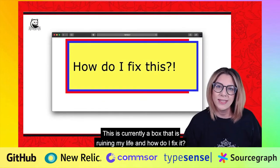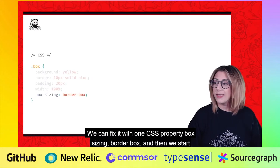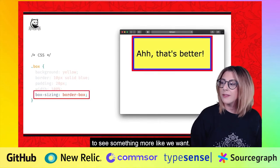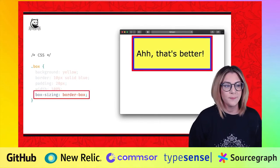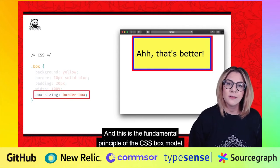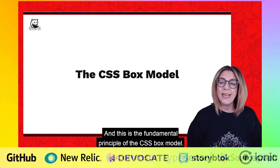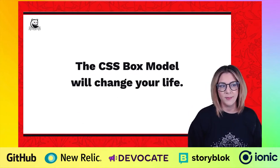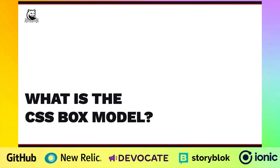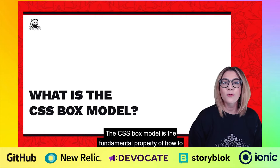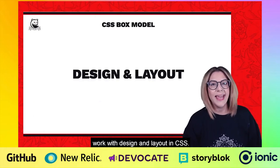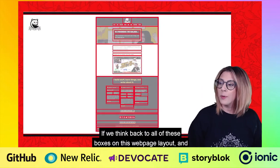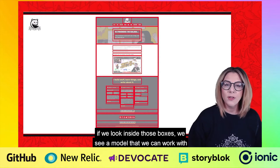And how do I fix it? We can fix it with one CSS property: box-sizing border-box. And then we start to see something more like we want. And this is the fundamental principle of the CSS box model. This is the box that will change your life. What is the CSS box model? The CSS box model is the fundamental property of how to work with design and layout in CSS. If we think back to all of these boxes on this web page layout, and if we look inside those boxes, we see a model that we can work with if we understand it.